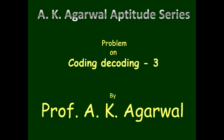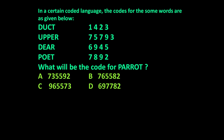Hello friends and welcome to AK Agarwal Aptitude Series. In this session we are going to learn a technique for solving a problem on coding and decoding. The given problem is: in a certain coded language, the codes for some words are as given below — duct: 1423, upper: 75793, deer: 6945, poet: 7892. Based on these coded words, you have to find out the code for 'parrot'. Four options are given and you have to find the correct suitable code.